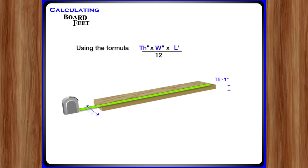Using the formula thickness times width times length divided by 12, the above four by four board would be 1 times 8 times 8 divided by 12, or 5.3 board feet.